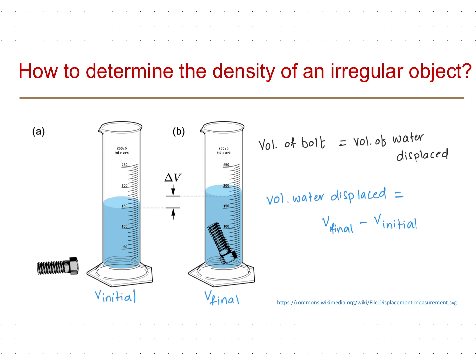Once we know the volume of the bolt, we can determine its density using the formula: density equals mass of the bolt divided by volume of the bolt. The mass of the bolt is found by placing it directly on a balance, and the volume is determined by the water displacement method described above.